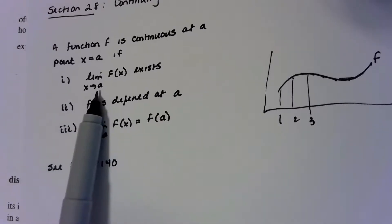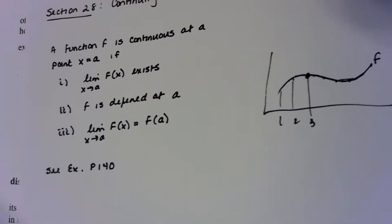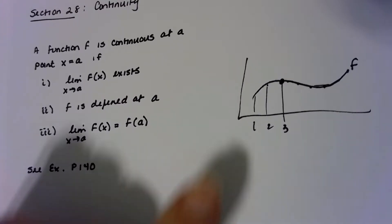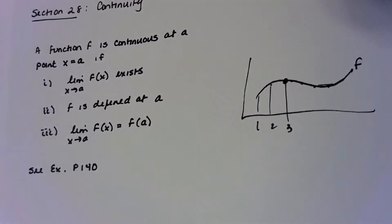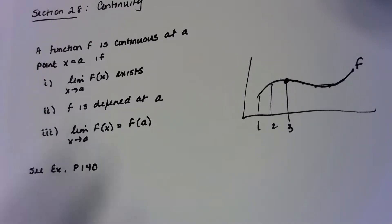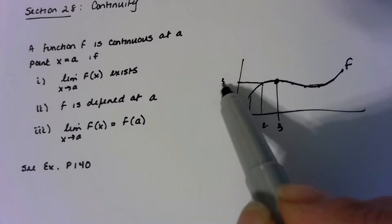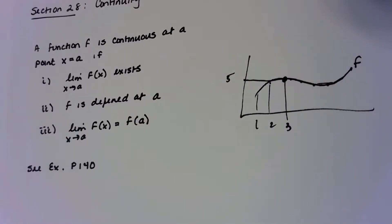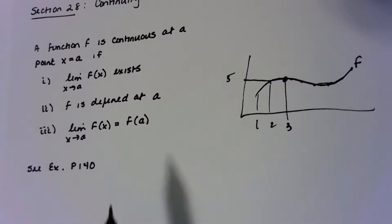Number one, the limit has to exist as x approaches that point. For instance, if we're checking whether the function is continuous at x equals 3, the values have to approach the same number from the left and the right. Number two, the function has to be defined at the point — f of a must have a value, meaning there can't be a hole there. Number three, the limit has to equal the function output value at that point.